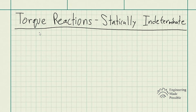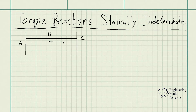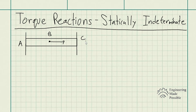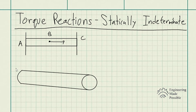If you remember a previous video where we did statically indeterminate axially loaded members — a member between two walls with an external load applied — equilibrium equations alone would not suffice to solve for the reactions at A and C. We had to use a compatibility equation. Similarly, we have the same situation for torque-loaded members.